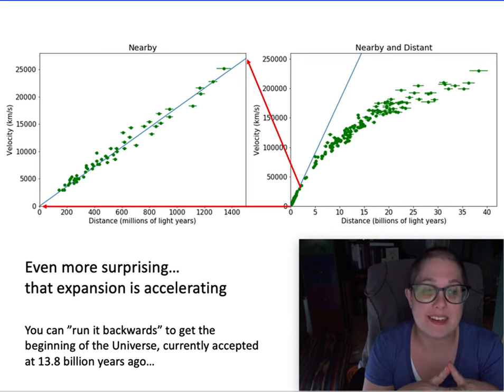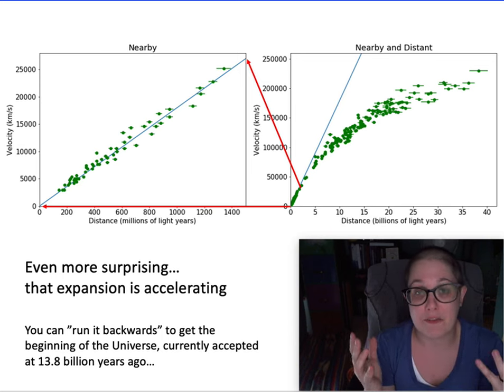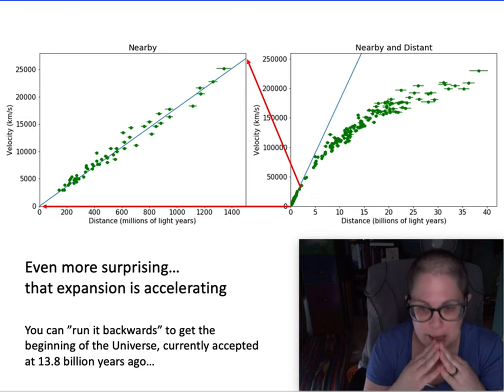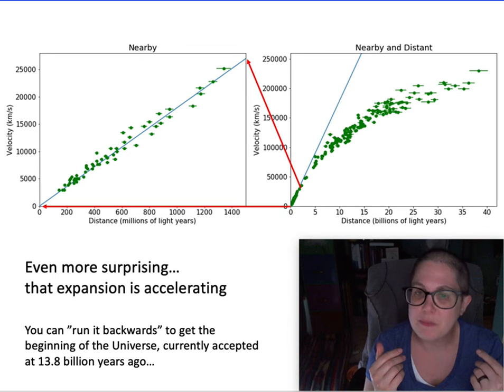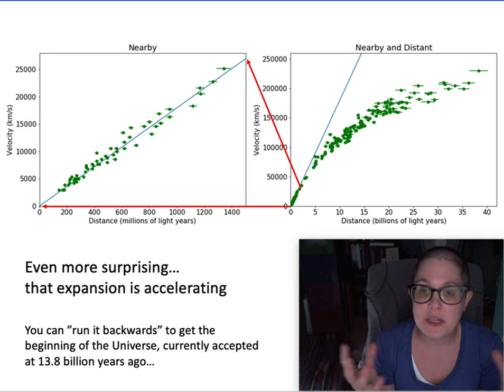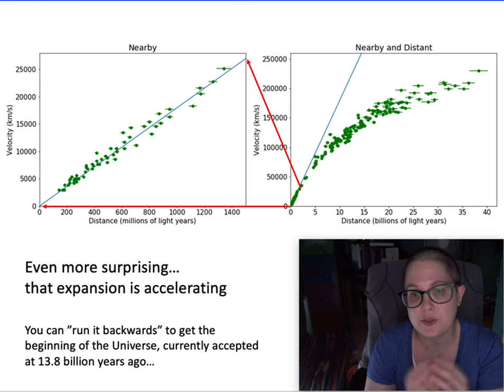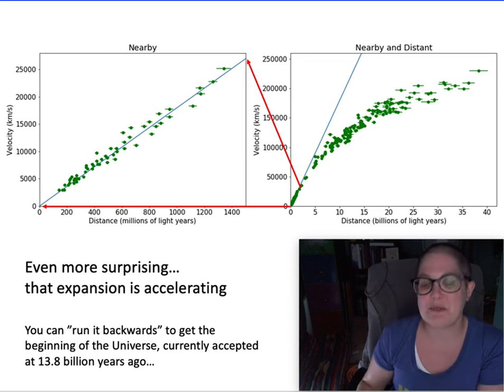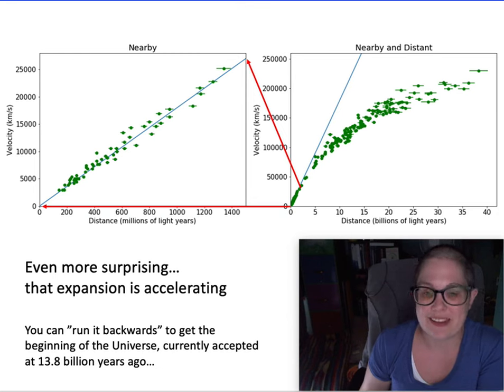But that's the model that we have from all the observations to date. In fact, that one won a Nobel prize fairly recently. If you run this expanding model backwards, based on these measurements, we get to the beginning of this universe when everything was in one place at 13.8 billion years ago. And the next and last video is going to be about what happened 13.8 billion years ago, what we think happened 13.8 billion years ago that kicked all this off.